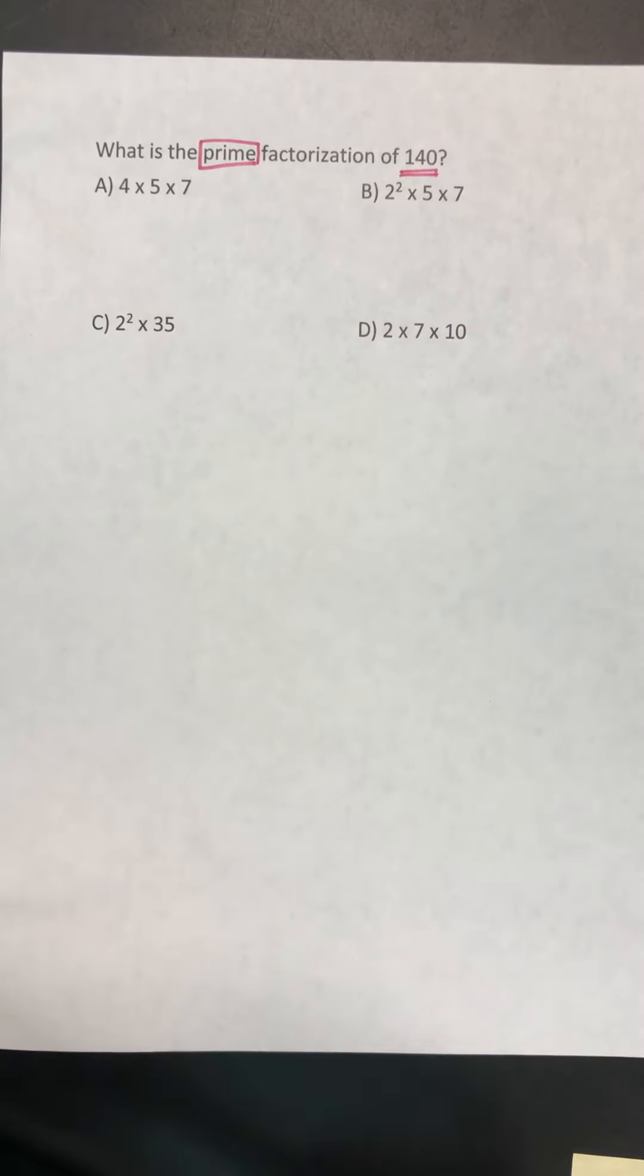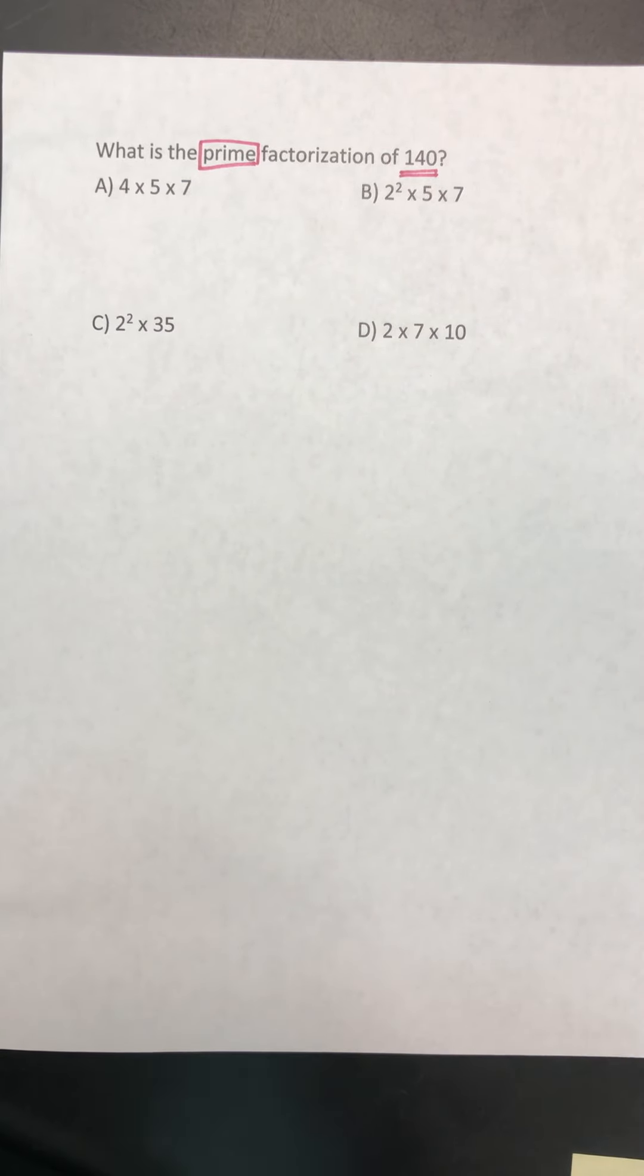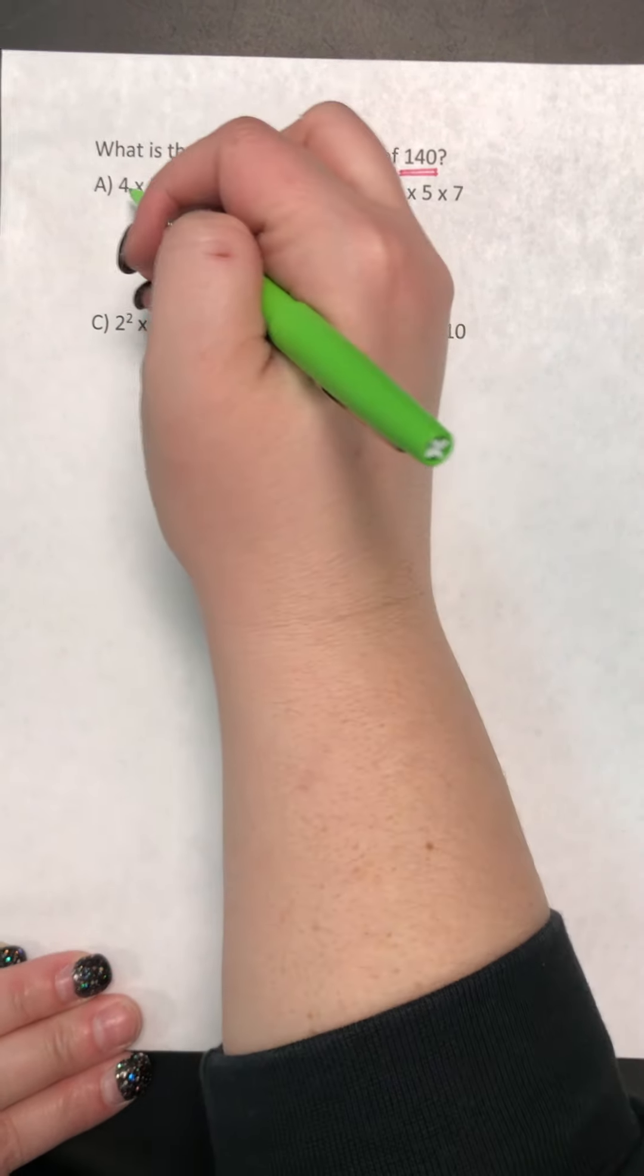So looking at answer choice A, I have 4 times 5 times 7. So I have to check and see, are these three numbers prime? Well, can I break 4 down?